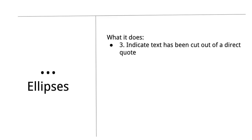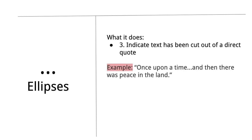The third thing ellipses do is indicate that words have been left out of a quote — like you're skipping over some part of the quote. Because when you have quotation marks, you're supposed to be saying this is exactly what was said. But dot dot dot, let's just skip over some stuff. Like: 'My dad always told stories. Once upon a time there was a beautiful princess...then there was peace in the land.' So that's it — those are your three uses of ellipses, and those are the three things that are considered grammatically correct.